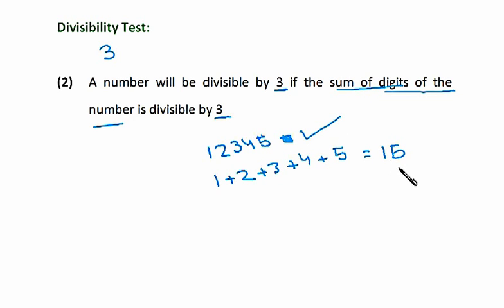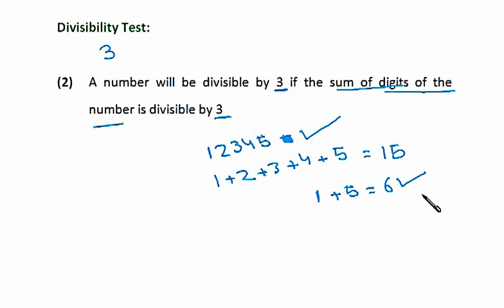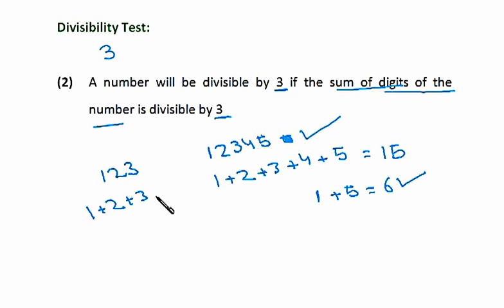We can even find whether 15 is divisible by 3 or not by adding 1 and 5, which gives 6. And 6 is divisible by 3. We'll take a few more examples. Suppose we have the number 123. So 1 + 2 + 3 equals 6, and yes, it is divisible by 3.